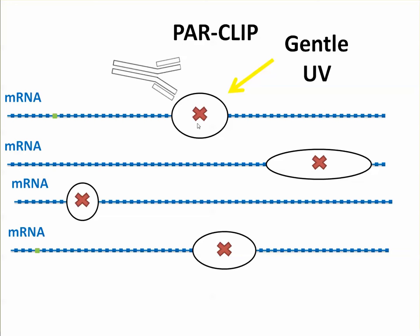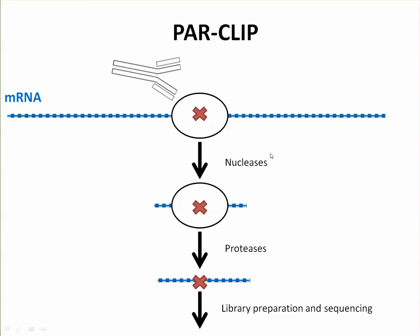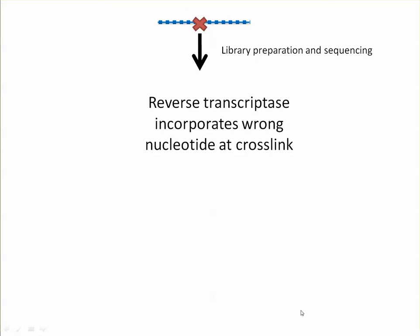Then again you have your antibody to your protein of interest and you do the same thing. But a special thing happens during the library preparation and sequencing. Reverse transcriptase incorporates the wrong nucleotide at cross-linked regions at these special nucleotides. So every special nucleotide that got cross-linked — and the cross-links should only be at these nucleotides — causes reverse transcriptase to incorporate the wrong nucleotide.